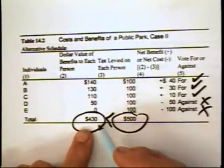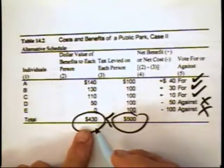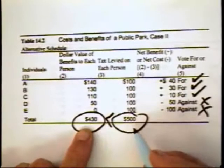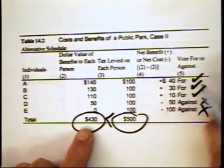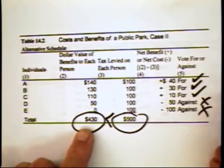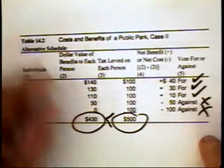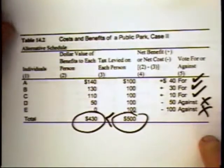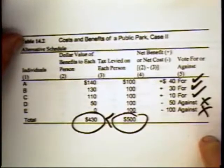Notice that we have a situation in which the benefits are less than the value of the park, but yet because of the distribution of the taxes and the benefits, the park actually passes. And it's also because of the majority rule kind of politics.